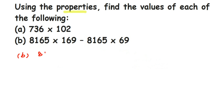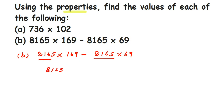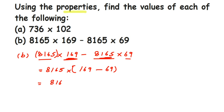The second question is: 8165 × 169 minus 8165 × 69. The number 8165 is common on both sides of the minus sign, so we pull it out. What remains is (169 − 69), which equals 100. So we have 8165 × 100, which equals 816500. That's it.